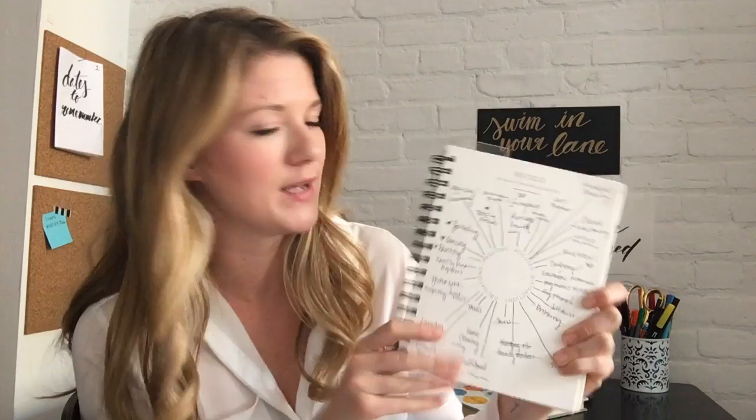After you have your full web drawn out — I'll show you one of my old webs here from my 2016 Q1 — I like to sit down and put a heart next to the things I really love to do. That's a moment to declare that I'm going to spend more time doing these things: journaling, spending time with friends, painting. Then ask yourself two more questions: 'What distractions can I erase and replace with a passion?' and 'If God was in charge of my schedule, what would he erase?'